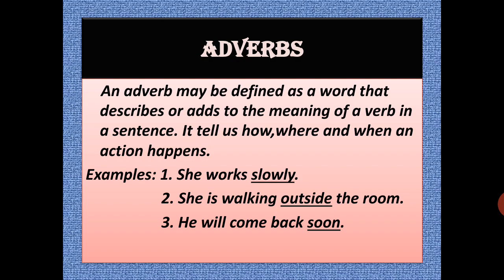An adverb may be defined as a word that describes or adds something to the meaning of a verb in a sentence. If there is any verb in a given sentence, the word which adds something to its meaning is called an adverb. It tells us how the verb was done, where the verb was done, and when the verb was done — how the action happened, where the action happened, and when the action happened.